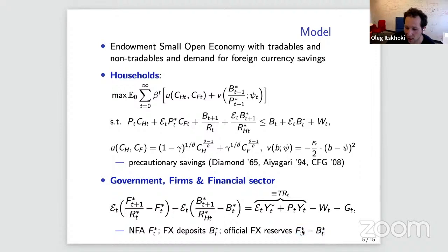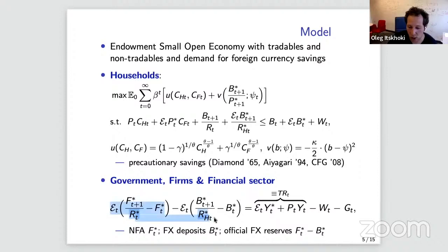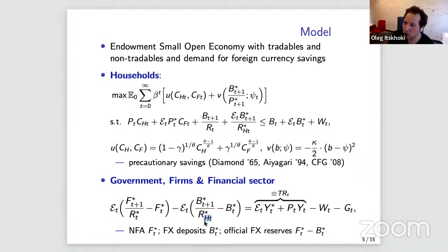The government starts each period with total net foreign assets F and privately held portion b, so government reserves equal F-minus-b. All these sanctions can target net foreign assets or government reserves. The international interest rate on foreign savings may or may not be available depending on financial sanctions. The household interest rate on foreign currency savings can differ from the international rate — this wedge reflects financial repression, where the government depresses expected returns on foreign currency savings domestically.